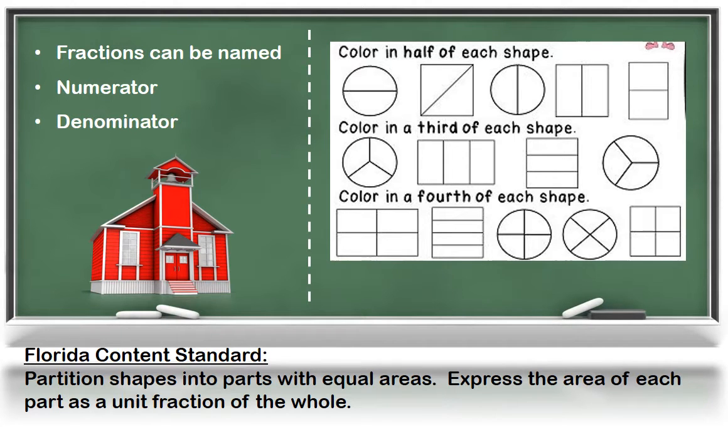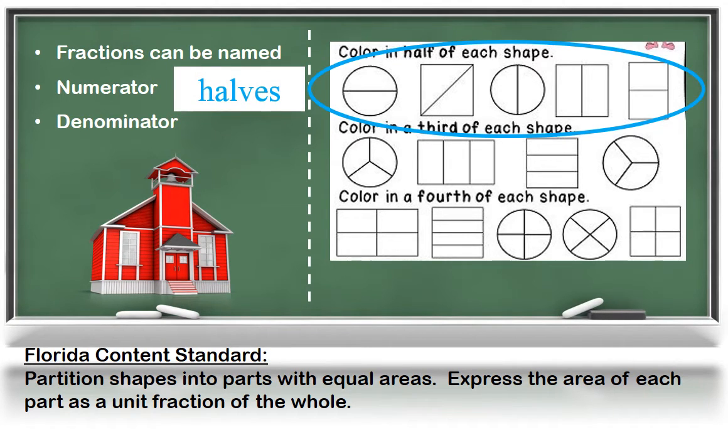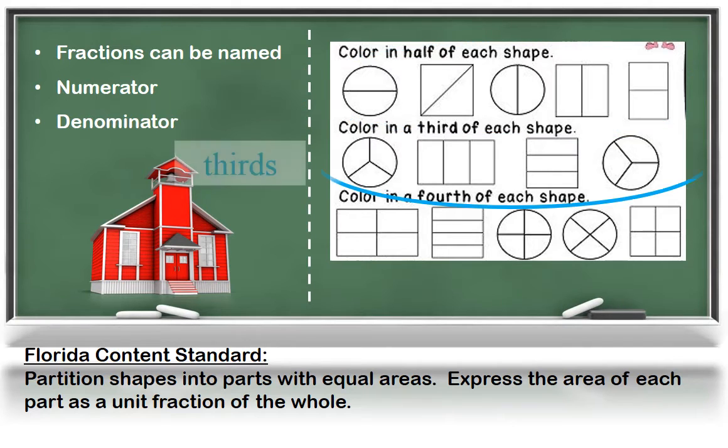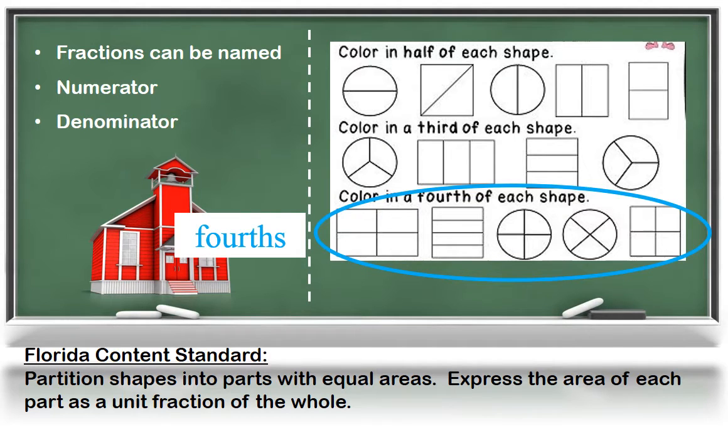Depending on the number of equal parts we are working with, fractions have specific names. When we divide into two equal parts, these parts are called halves. Three equal parts are called thirds. And four equal parts are called fourths, and so on with fifths, sixths, sevenths, etc.